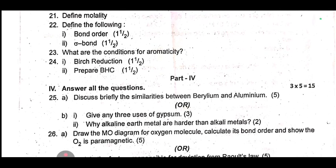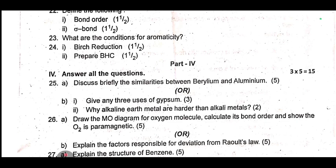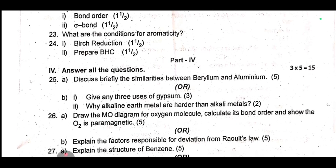26th one: draw the MO diagram for oxygen molecule, calculate its bond order and show the O2 is paramagnetic. B one: explain the factors responsible for deviation from Raoult's law.